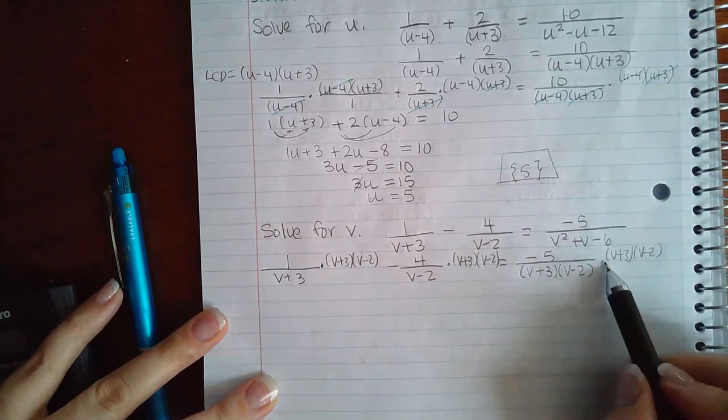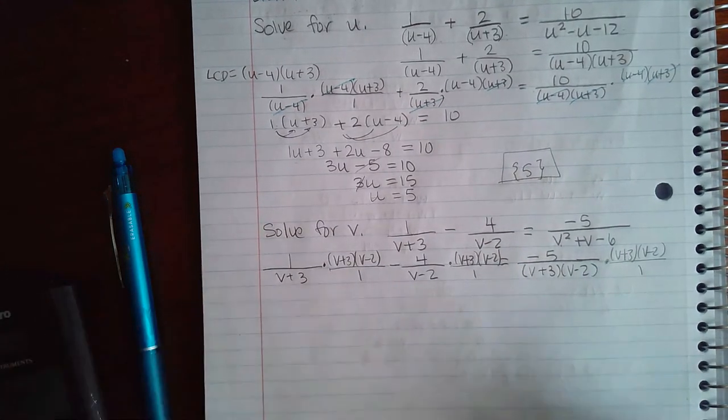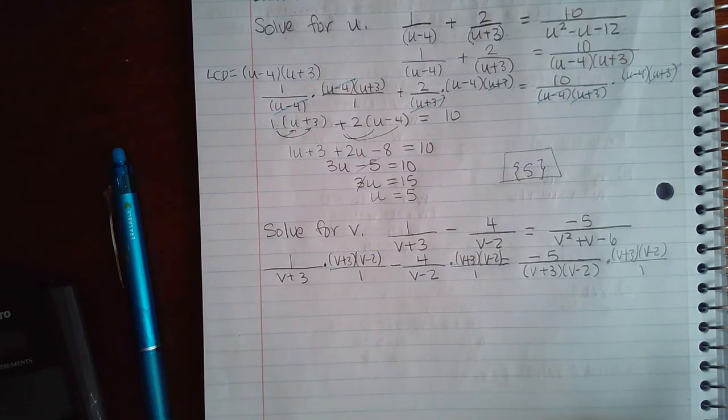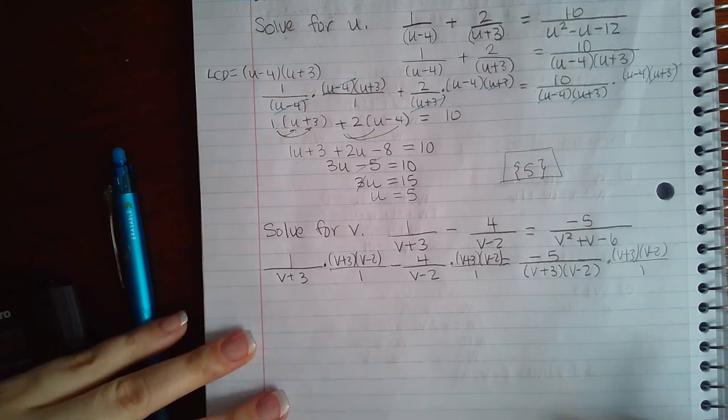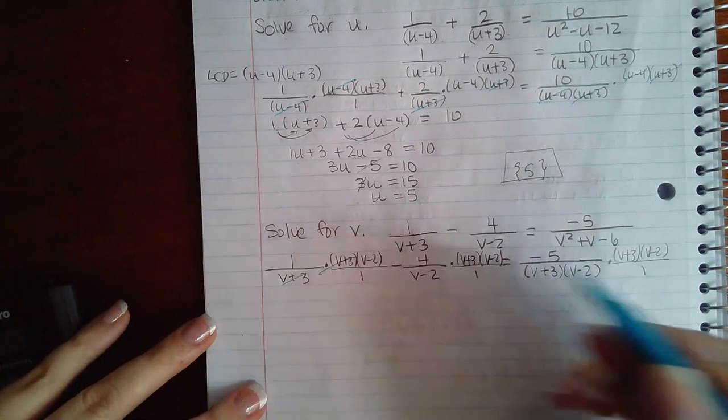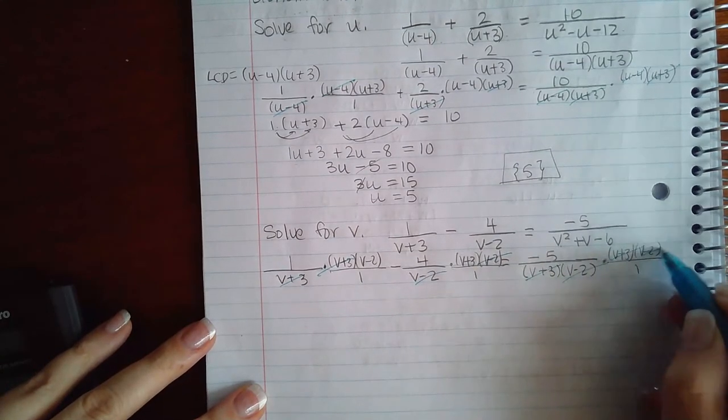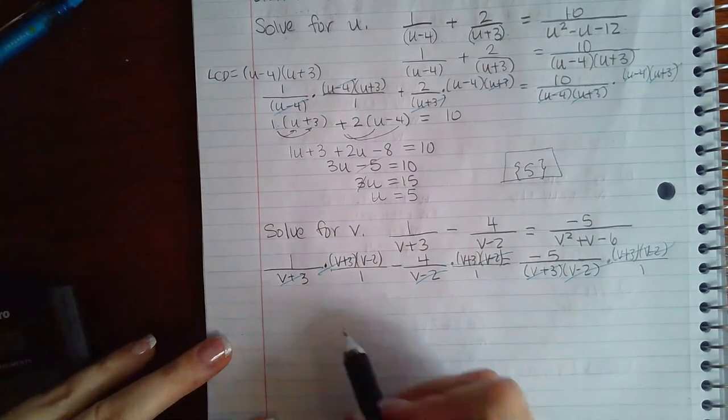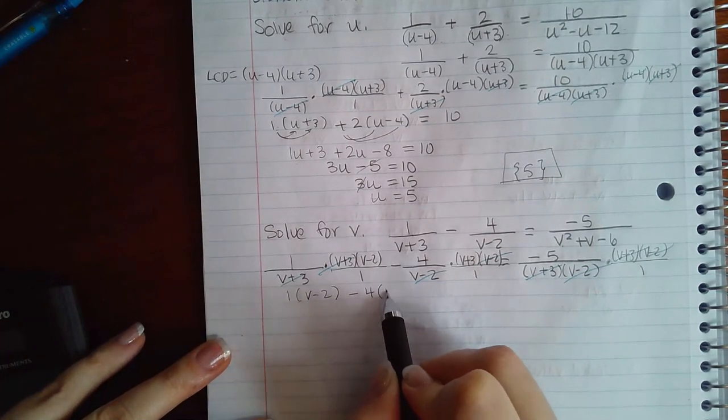If it helps, put it over 1 so you can tell that LCD is actually supposed to cancel with what is in the denominators. Here the v plus 3s cancel, the v minus 2s cancel, v plus 3's and v minus 2's. We end up with 1 times v minus 2 minus 4 times v plus 3 equal to a negative 5.